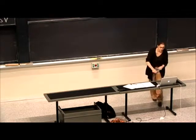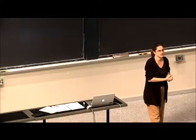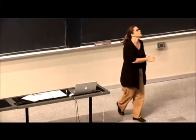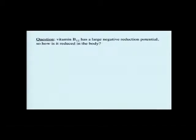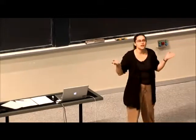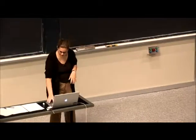So now I want to consider a biological example for a minute, and I'm going to ask a question that we'll answer at the end of class. In cells, things have reduction potentials. Vitamin B12 has a reduction potential — in fact, it has one of the largest negative reduction potentials of any biologically occurring molecule, and so it has to be reduced to be active in the body. So, how can something with a very large negative reduction potential be reduced? That's the question.